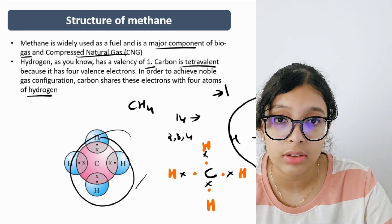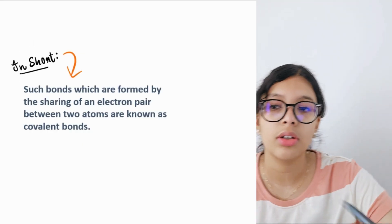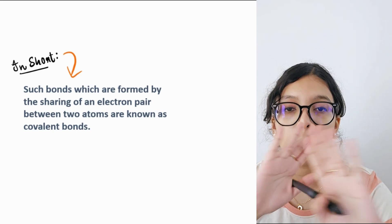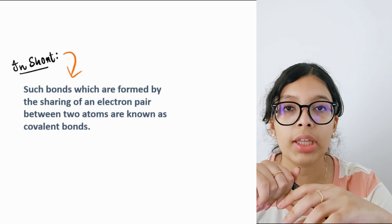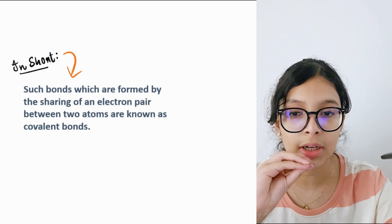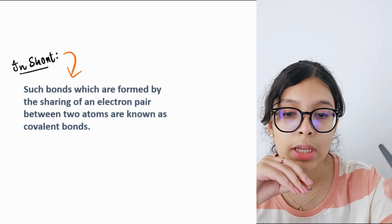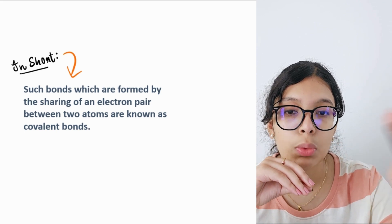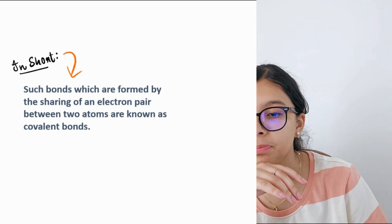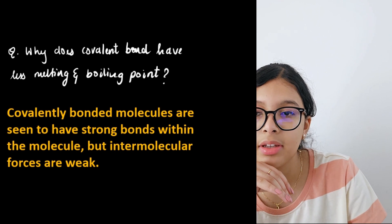In short, covalent bonding means sharing of electrons. Such bonds formed by the sharing of an electron pair between two atoms are covalent bonds.